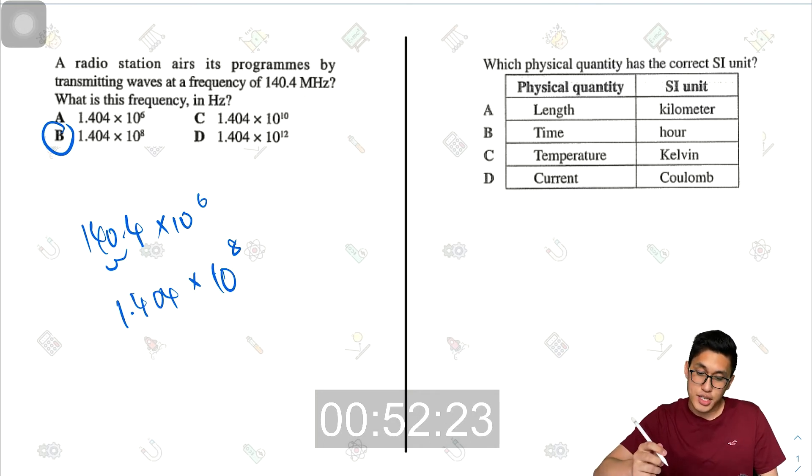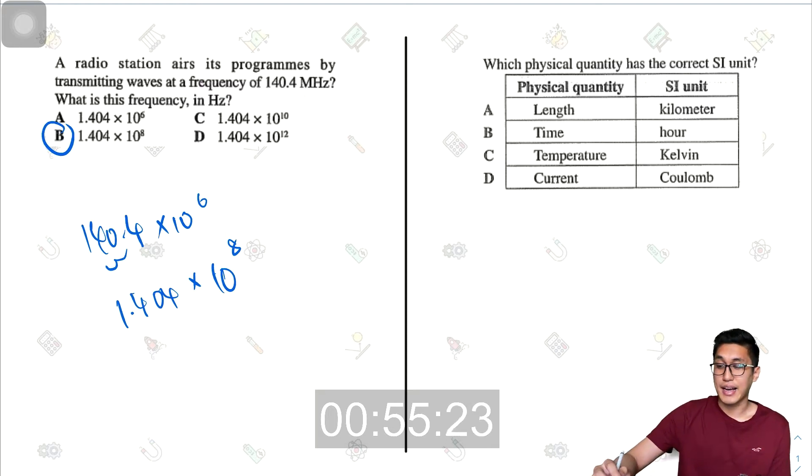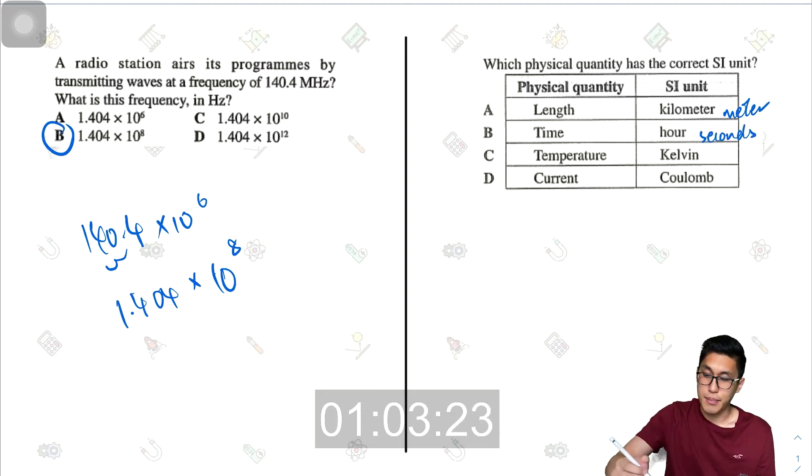The next question, which physical quantity has the correct SI unit? So length should be in meters, time should be in seconds, temperature should be in Kelvin. That's right, not Celsius, not Fahrenheit. And current should be in amperes. So temperature Kelvin, that is the correct one.